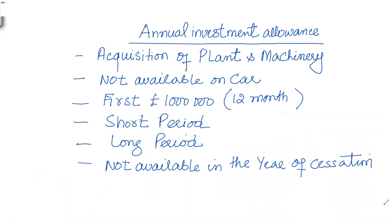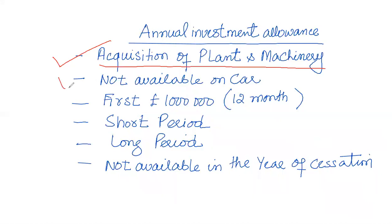AIA is available on the acquisition of plant and machinery — it is not available against the use of an asset, but on its first-time acquisition. It is not available on cars. Any item of plant and machinery other than a car will attract AIA. The AIA limit is £1 million for a period of 12 months.